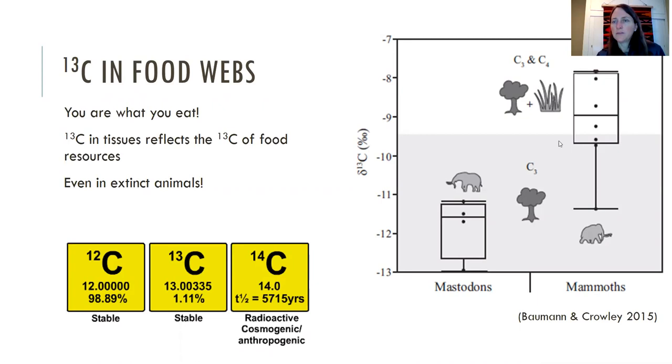So here we have mastodons versus mammoths. People can take mastodon tissue and mammoth tissue from ice samples or from, you know, as long as you can get a tissue piece of bone, fur, something that you can take a sample of. What you can see here is that based on the C13 value shown on Y, it shows that mastodons were feeding more on trees than mammoths. Mammoths were feeding more on both trees and grasses, and so we can see what totally extinct organisms were eating based on their carbon-13 values.